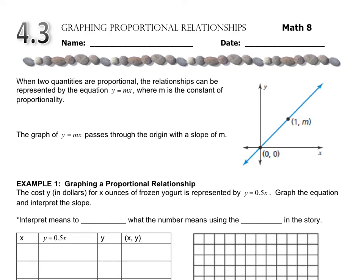This lesson takes our knowledge of slope and combines it with something you learned in seventh grade called the constant of proportionality. The constant of proportionality is basically the slope when the line goes through the special point of the origin.